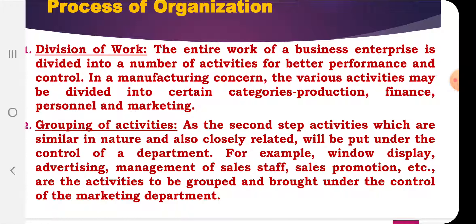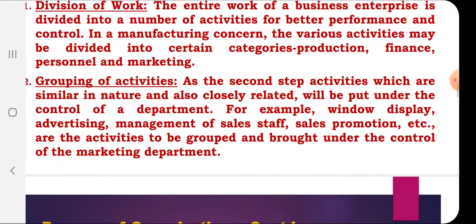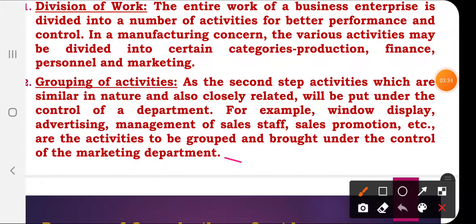Once the work is divided, the next step is grouping of activities. Activities that are similar in nature or closely related to each other are put under the control of a particular department. For example, advertising, sales promotion, management of sales staff, and window displays all come under the control of the marketing department.